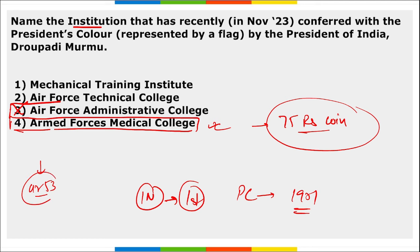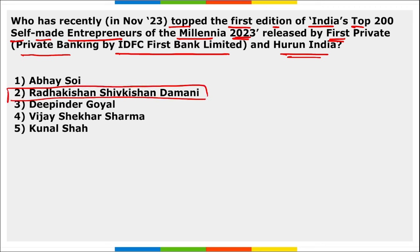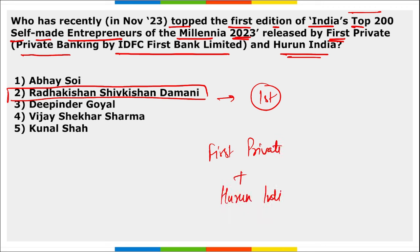Next: Who topped the first edition of India's Top 200 Self-Made Entrepreneurs of the Millennia 2023 released by IDFC First Bank's First Private? It is Radhakishan Shivkishan Damani. This report was released by First Private along with Hurun India. He was followed by Binny Bansal and Sachin Bansal, co-founders of Flipkart India. The net worth of Radhakishan Damani is close to Rs. 2.38 lakh crore.